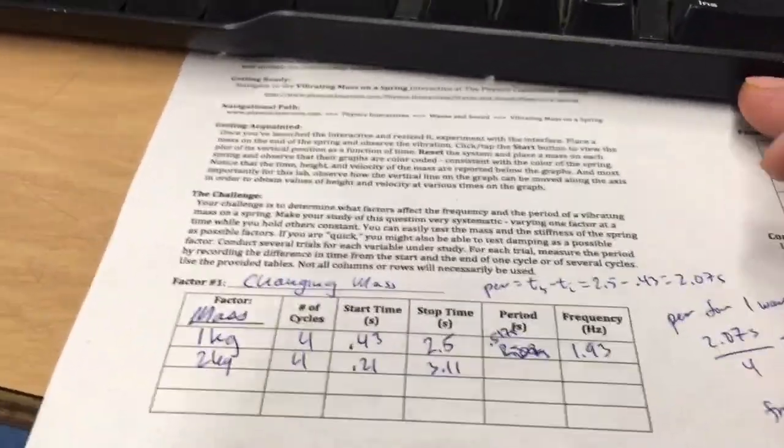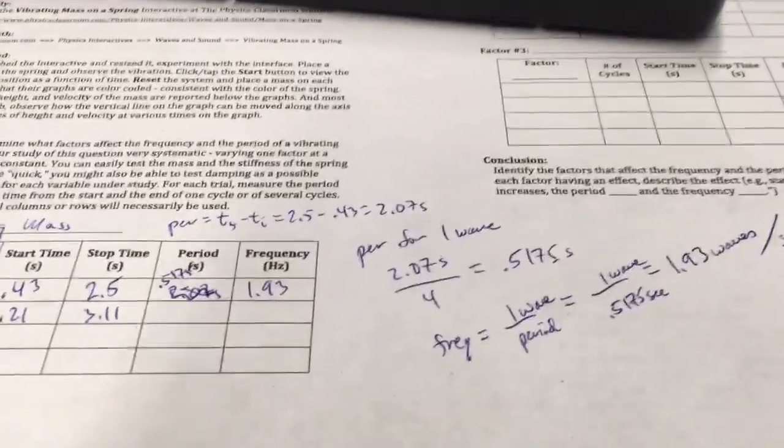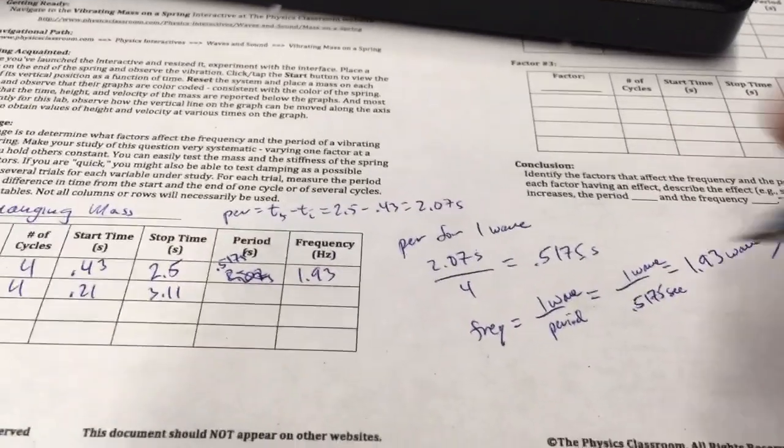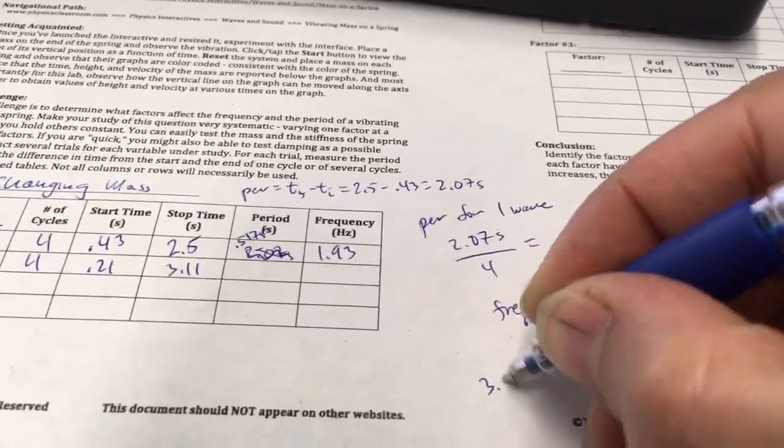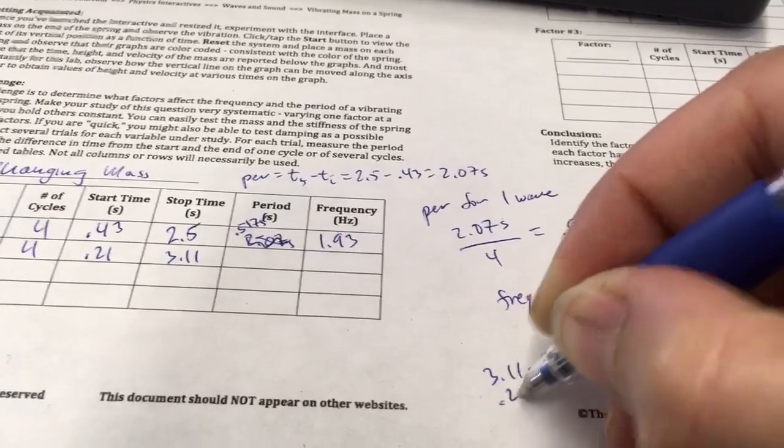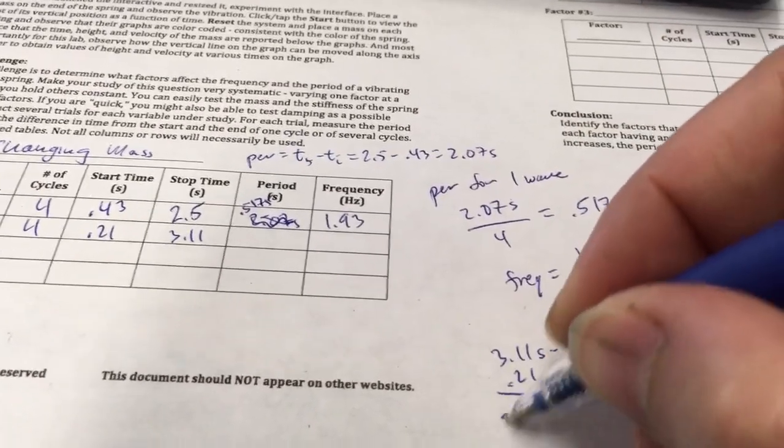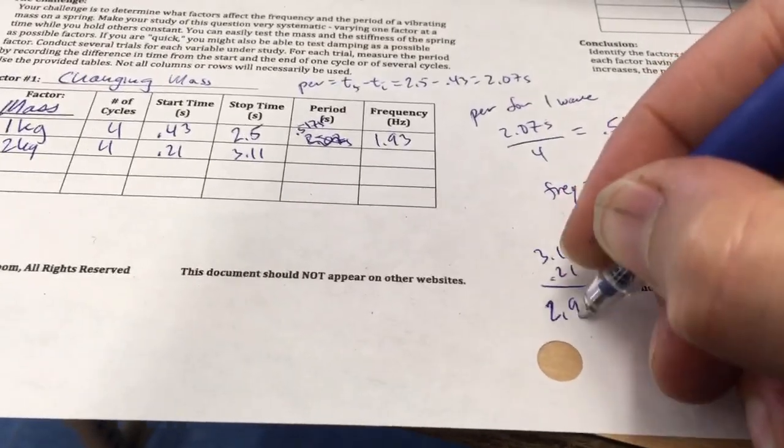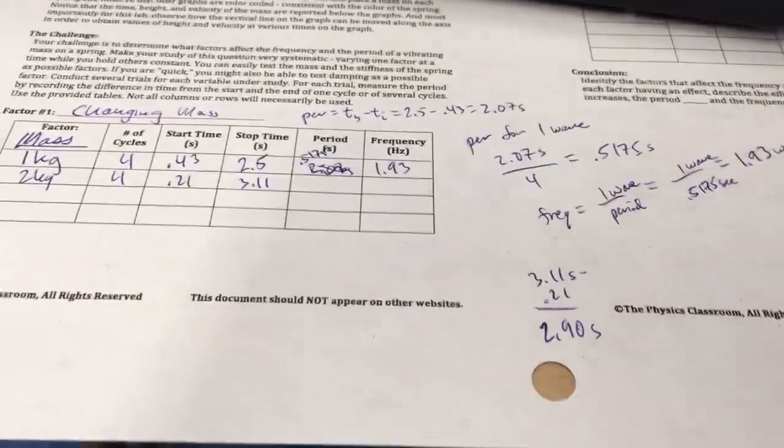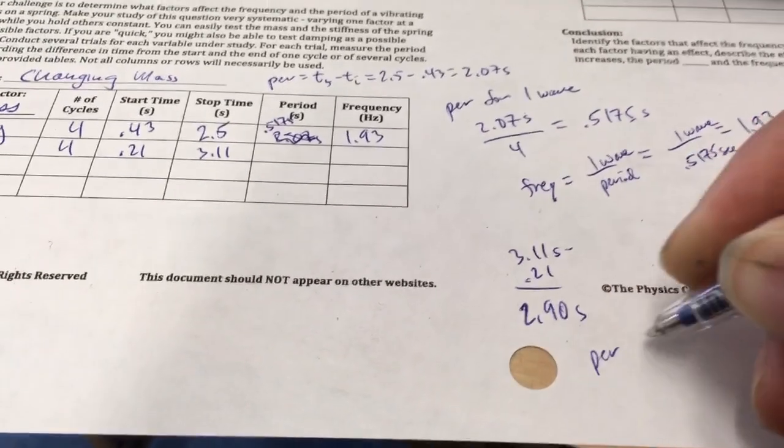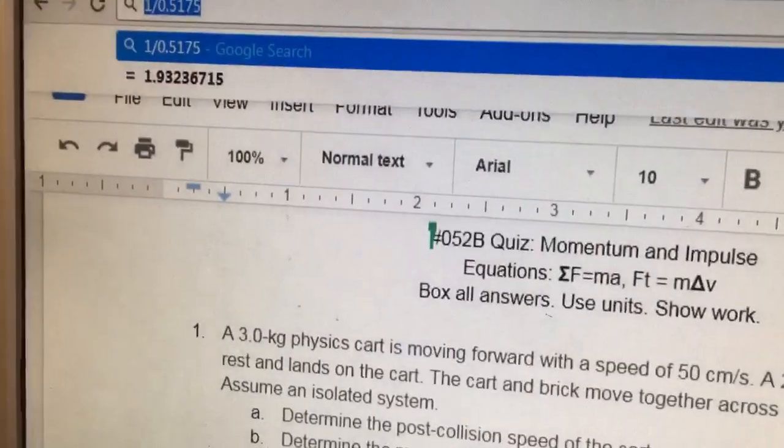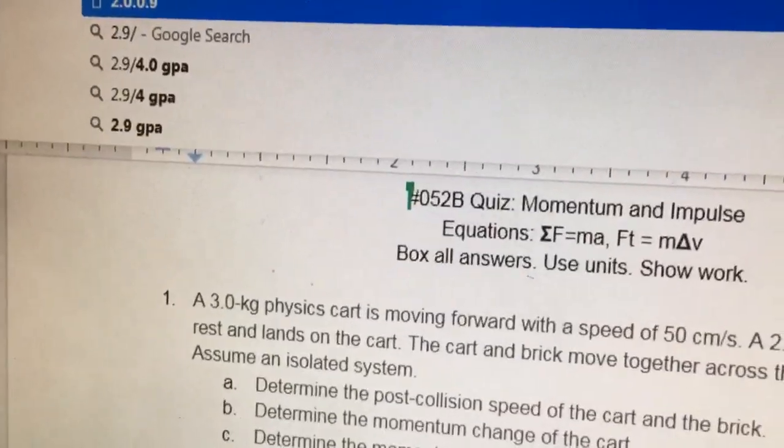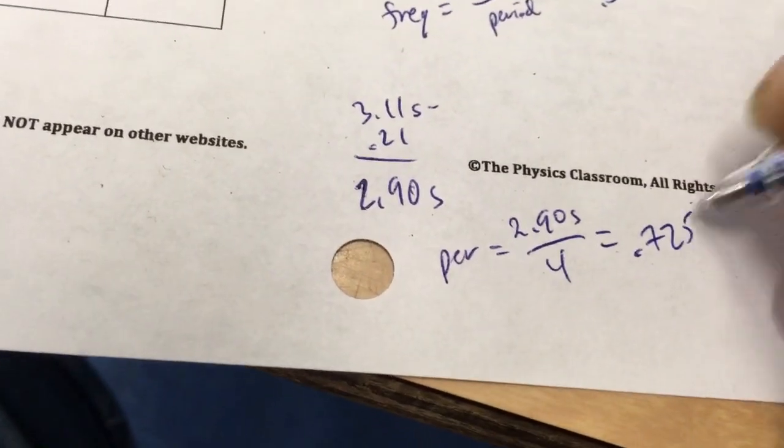So I'm going to run out of space to do this math. You probably want to do it on a separate sheet of paper. But the period for the 4 cycles is going to be 3.11 seconds minus 0.21 seconds. And so that comes out to be 2.90 seconds. That's for 4 cycles, though. I've got to divide that by 4. So the period is going to be 2.90 seconds divided by 4 cycles.